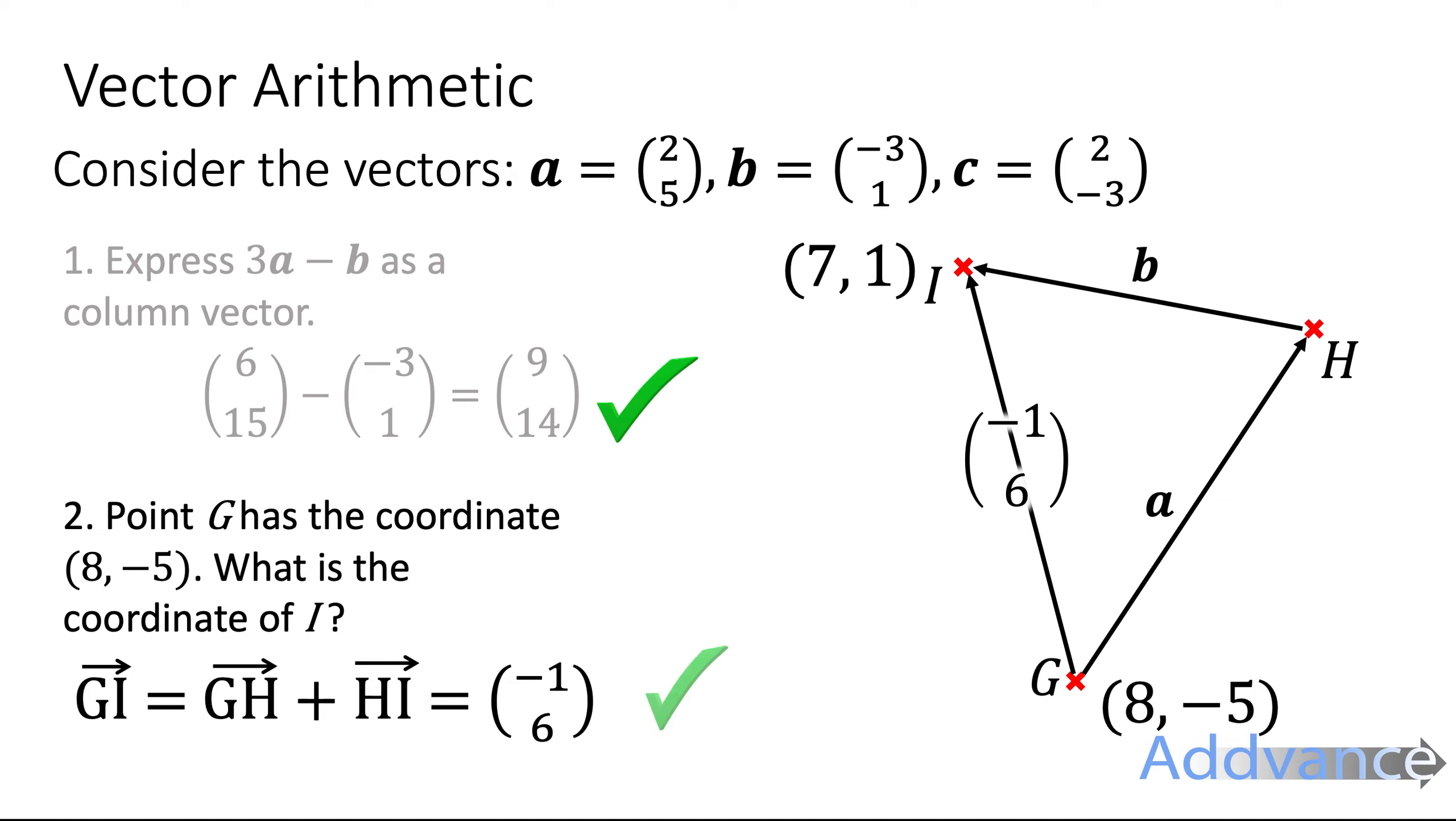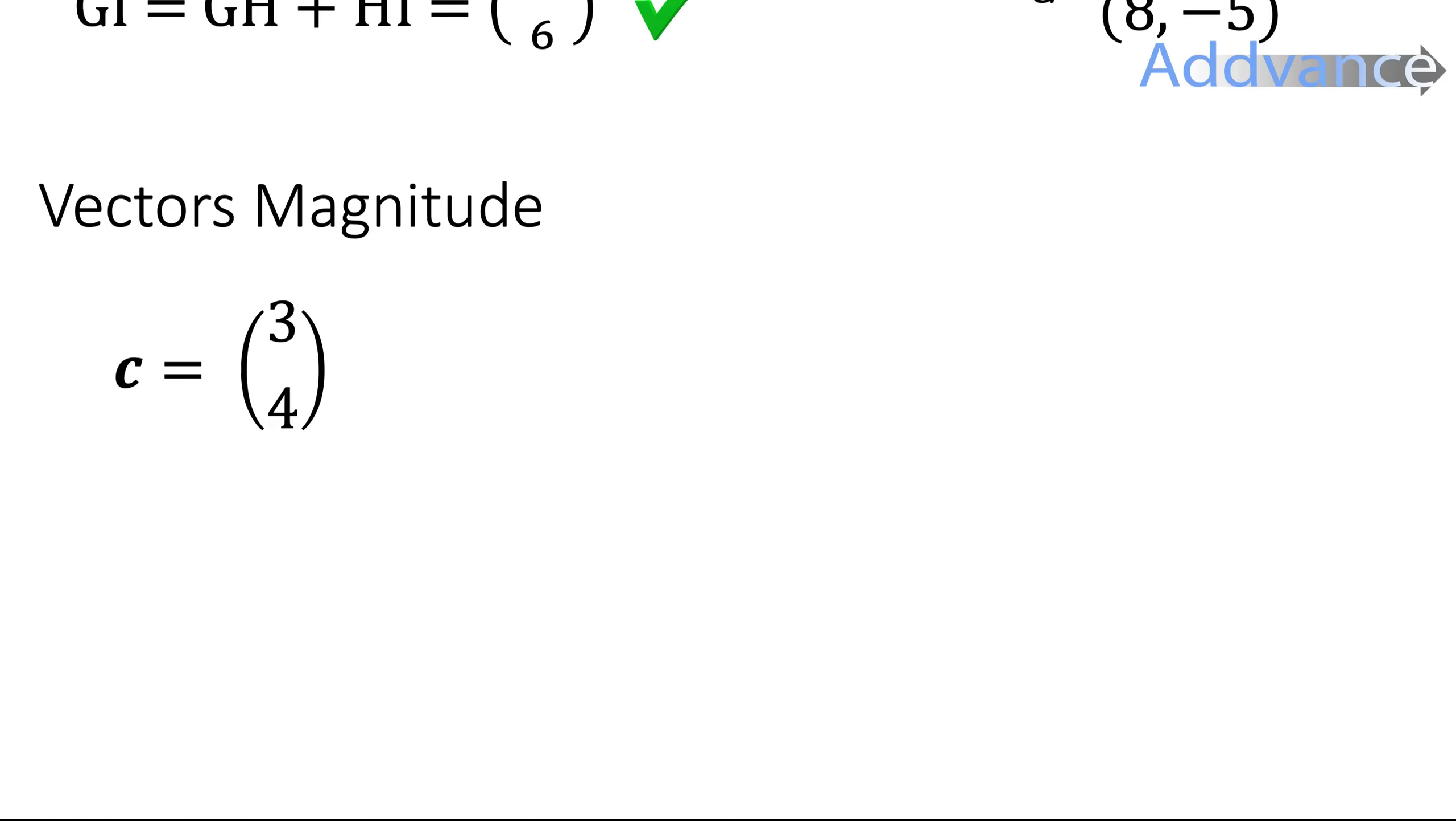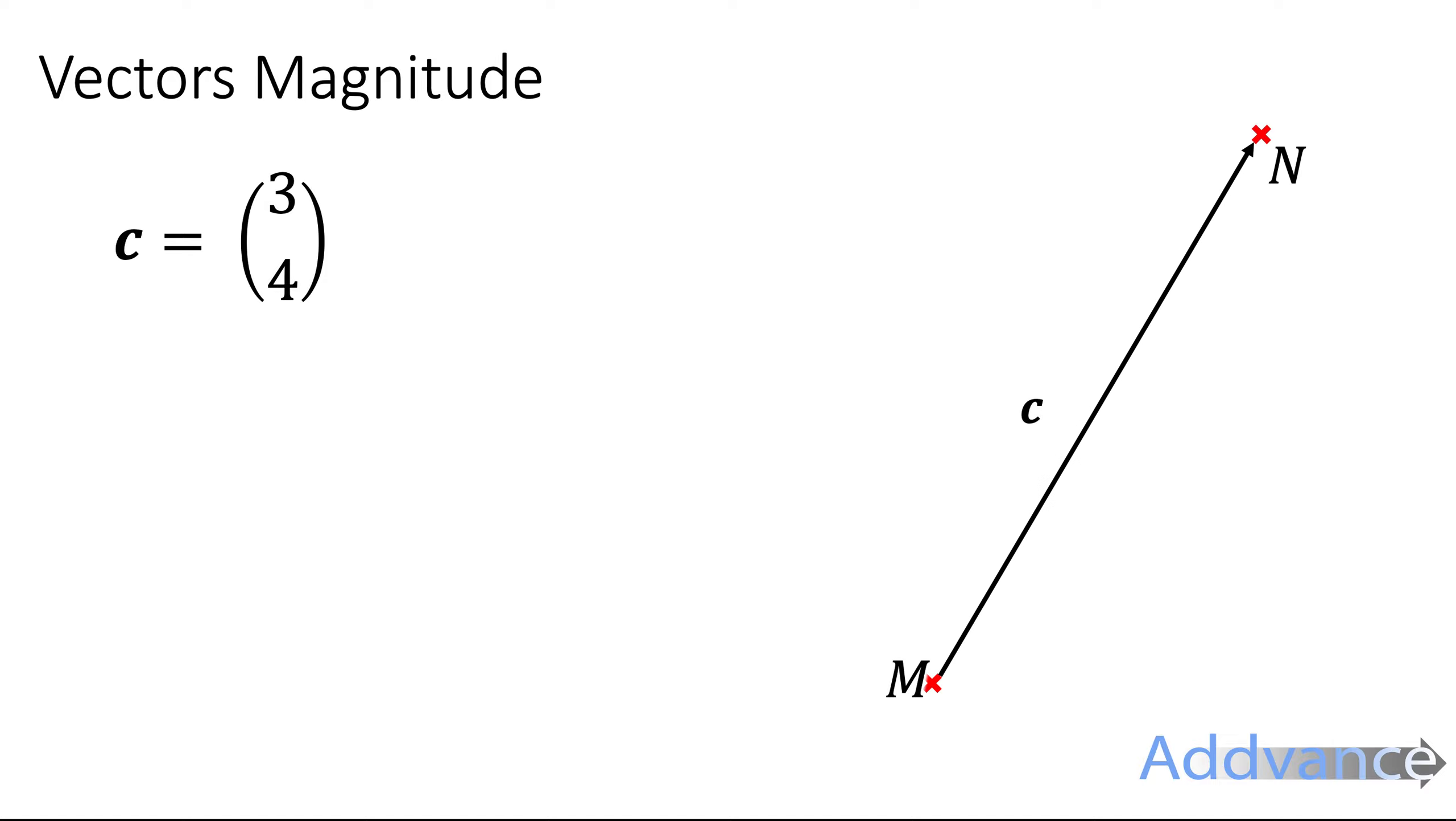Now the final example I'm going to show you is how to work out the size of a vector. So here we've got the vector (3,4) three across four up and we can draw this as a triangle three across four up and to work out the size of c well that's just Pythagorean theorem because it's a right angle triangle.